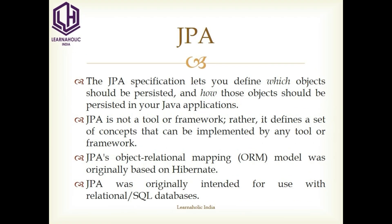The Java Persistence API is concerned with persistence, which loosely means any mechanism by which Java objects outline the application process that created them. In other words, the JPA specification lets you define which objects should be persisted and how those objects should be persisted in your Java application. JPA is not a tool or framework; rather, it defines a set of concepts that can be implemented by any tool or framework. JPA's ORM model was originally based on Hibernate, and JPA was originally intended for use with relational SQL databases.